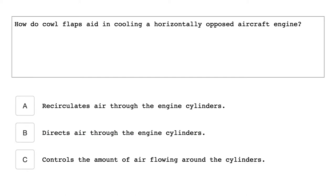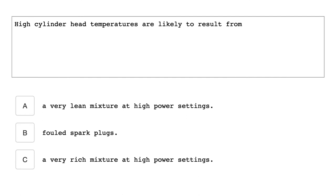How do cowl flaps aid in cooling a horizontally opposed aircraft engine? Controls the amount of air flowing around the cylinders. High cylinder head temperatures are likely to result from a very lean mixture at high power settings.